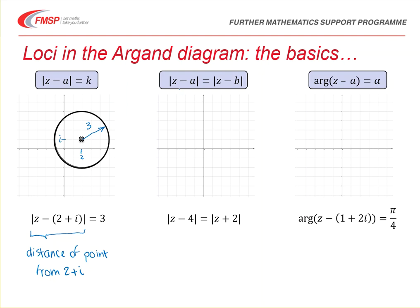In my second example, I've got the modulus of z minus a is equal to the modulus of z minus b, where a and b are complex numbers. In my example, I have the modulus of z minus 4, meaning the distance away from the point 4 on the real axis, and the modulus of z plus 2, meaning the distance away from the point minus 2 on the real axis. If I mark these two points on the Argand diagram, I can see that what I want are points equidistant from these two, giving a straight line that forms the perpendicular bisector of the two points.